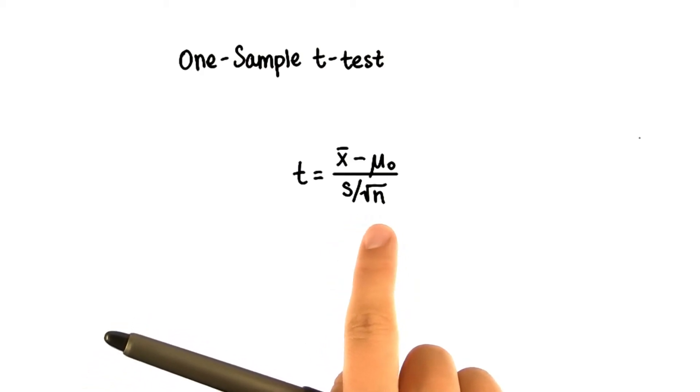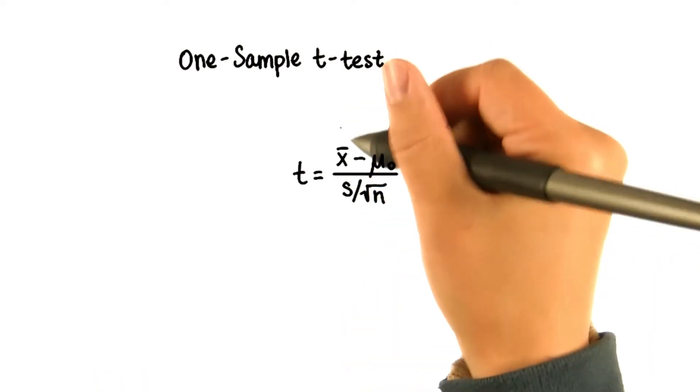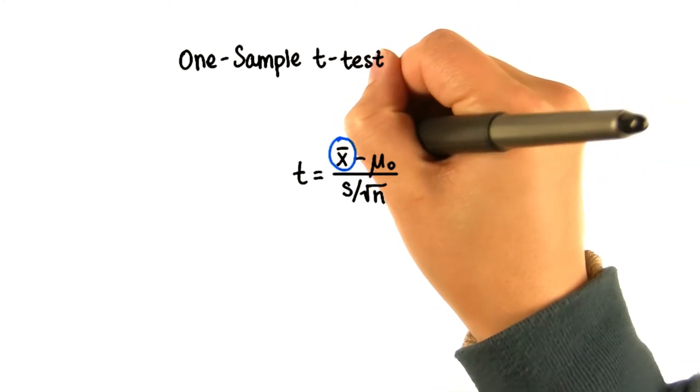This statistic here is for a one-sample t-test. This is just like the z-tests you learned in lesson 9. It's a one-sample t-test because we only have one sample with mean x̄.